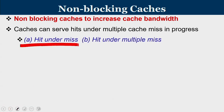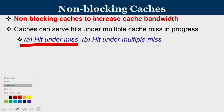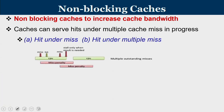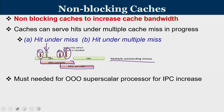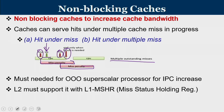There are two types: hit under miss and hit under multiple miss. The CPU is working, a miss occurs, but the CPU is still running, and then one more miss occurs. The miss penalty of the first miss and the second miss overlap. You reach a point where the CPU stalls, but in between, hits are also serviced. You have multiple outstanding misses, and these caches are known as non-blocking caches — a must for out-of-order superscalar processors for IPC increase. L2 must support it, and L1 uses an MSHR — miss status holding register.